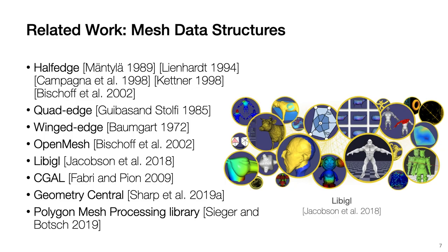There are many data structures available for meshes. Typical representations include half-edge, quad-edge, and ringed-edge. Many mesh processing libraries have been proposed over the years, such as Seagull, OpenMesh, and Libri.jl. However, a design goal for Ahad Mesh is to generate code with minimal dependencies, allowing authors to write portable mesh processing expressions that compile to any supported backend.